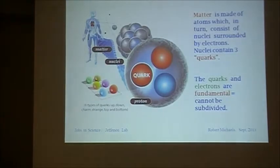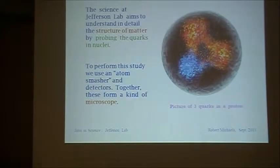So now I'm going to explain what I do. I do research in nuclear physics. The idea is that matter is made out of atoms which in turn consist of nuclei that are surrounded by electrons. The nuclei contain three quarks. The quarks and electrons are considered to be fundamental particles which means that they can't be subdivided. This is a view of what matter is made out of. What we study in nuclear physics is the forces between the quarks and how they arrange themselves in matter.